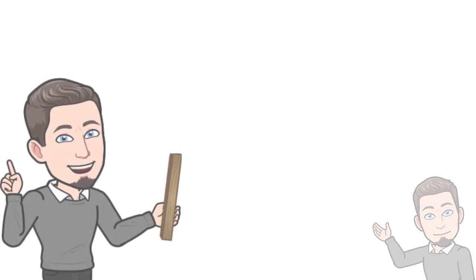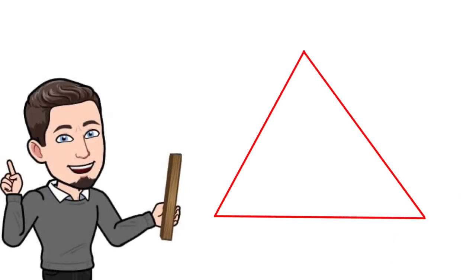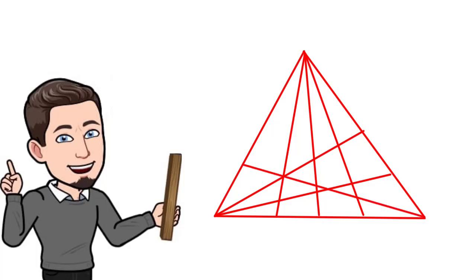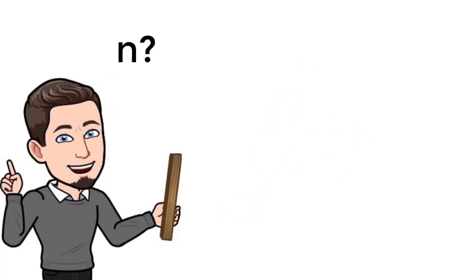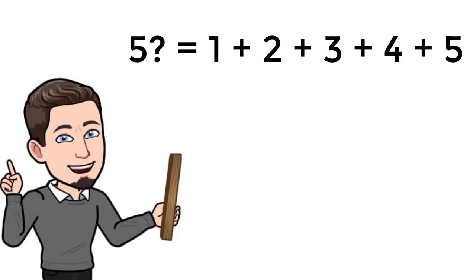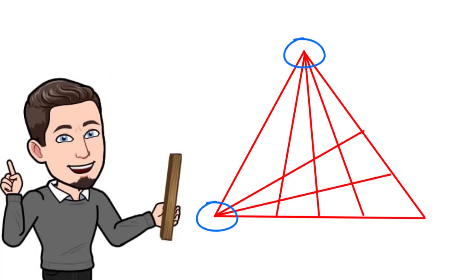To understand this formula, we split the explanation into three chapters: first, cases where segments are drawn from only one vertex; second, from only two vertices; and the last one, from three vertices, which is the general case. Before we start, there are some definitions to know. We consider 'n?' to equal the sum of numbers from one to n — for example, 5? = 1+2+3+4+5. The vertex that segments are drawn from we call the 'source'.